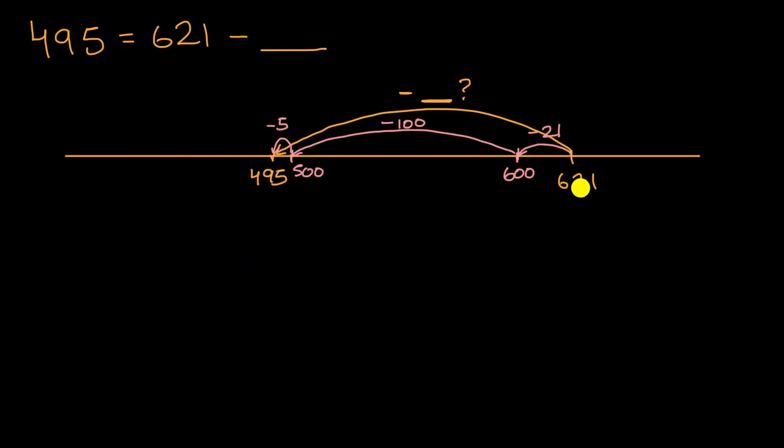So to go from 621 to 495, I picked these numbers intentionally. I picked 21 to subtract to get to 600, I picked 100 to get to 500, and then I picked 5 to get to 495. I subtracted a total of 21, then I subtracted 100, then I subtracted 5.